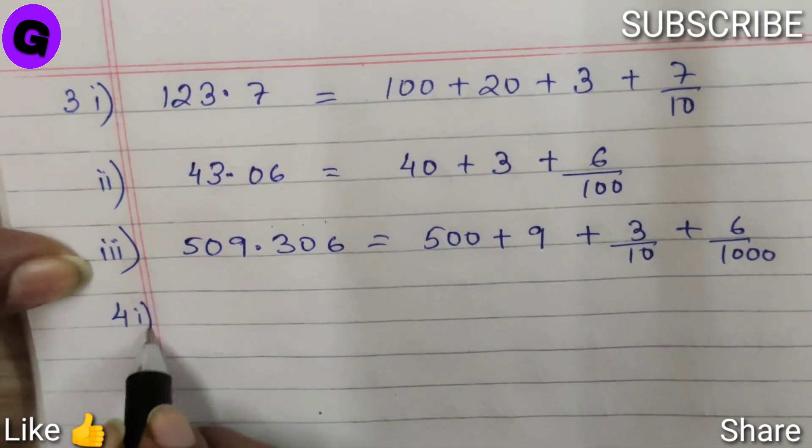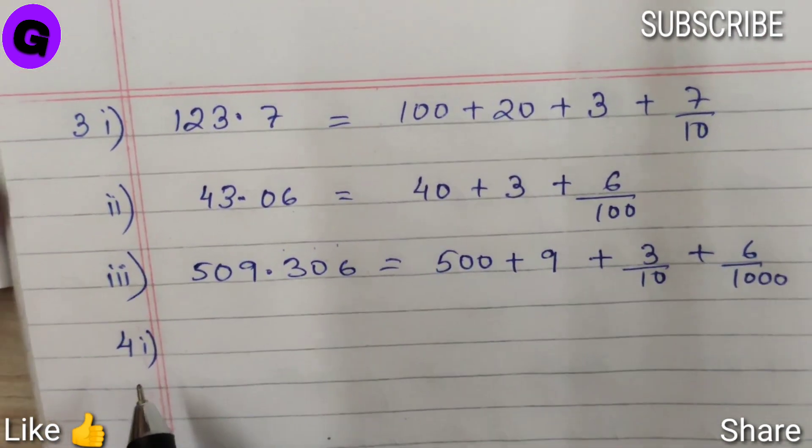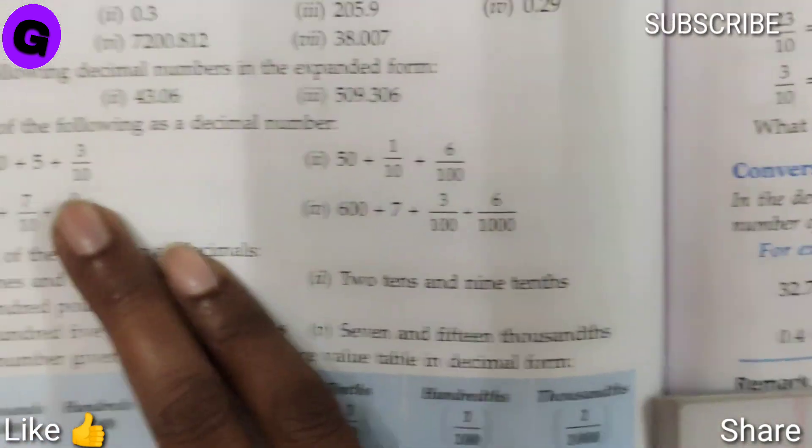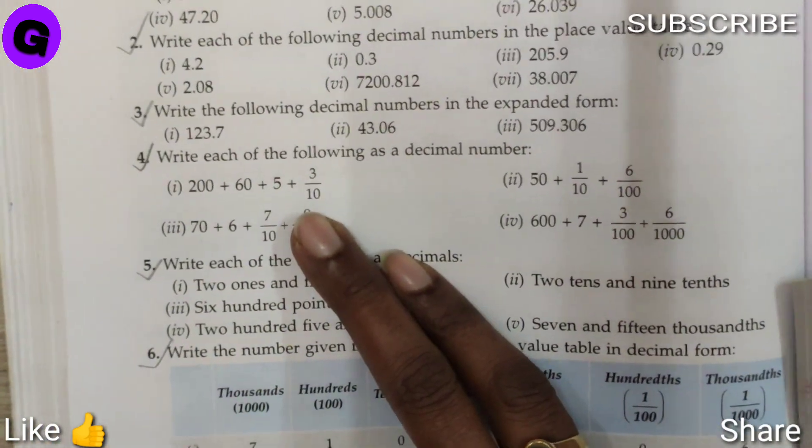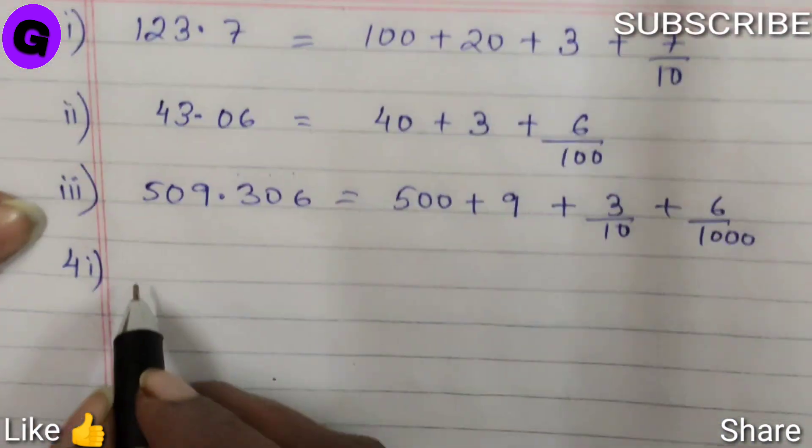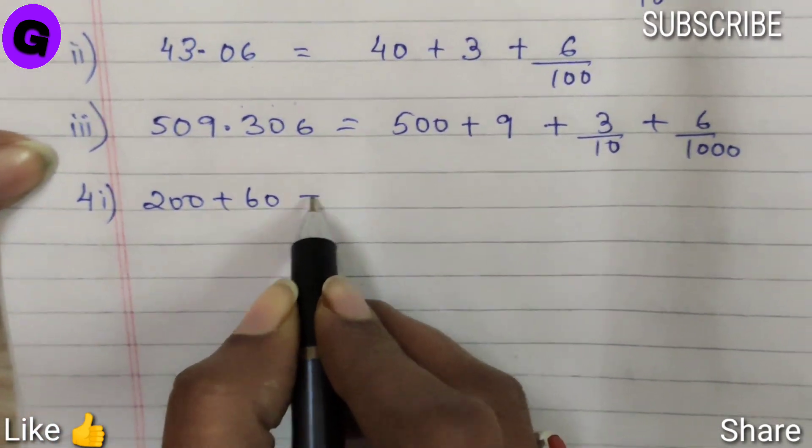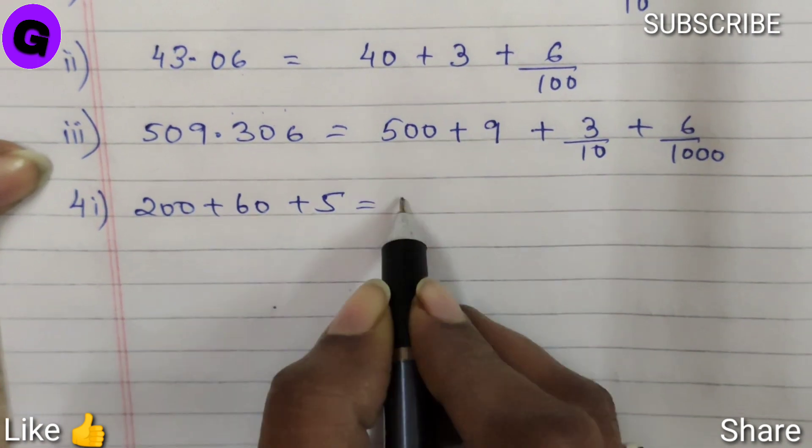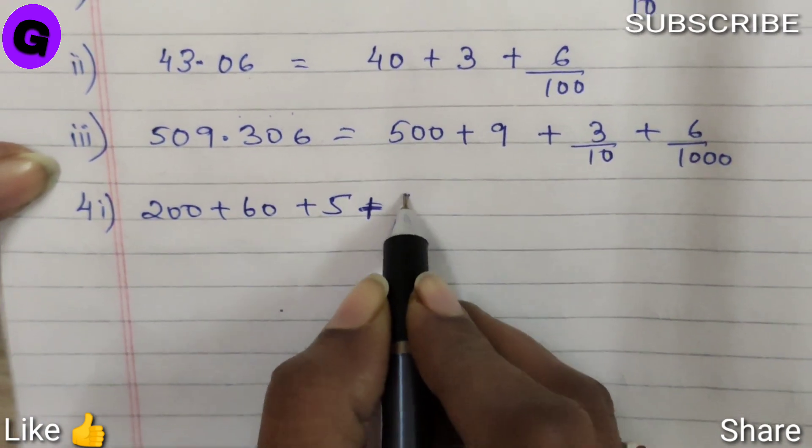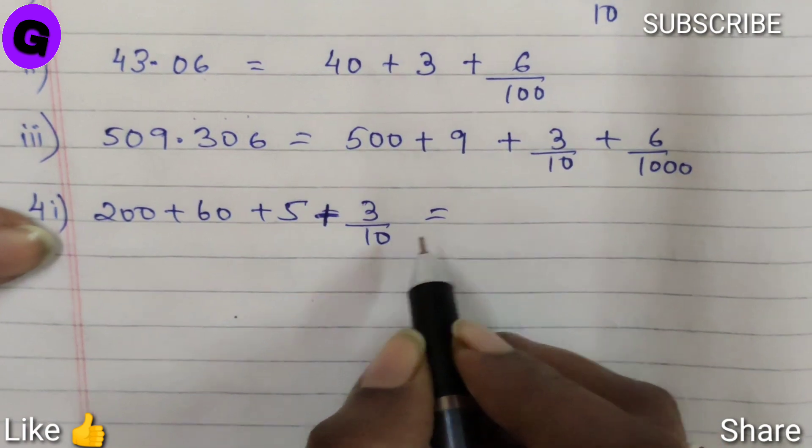Now question number 4. Now they have already given in expanded form and we have to write as a decimal number. Number 1, it says 200 plus 60 plus 5, sorry, plus 3 by 10 is equal to.